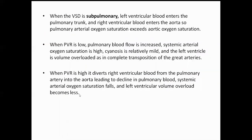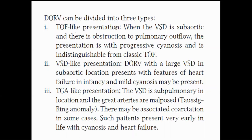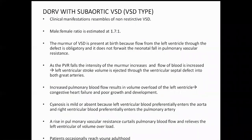To summarize, DORV is basically classified into three major presentations: VSD-like presentation and TGA-like presentation. For DORV with subaortic VSD, the clinical manifestations basically resemble a non-restrictive VSD. The pulmonary-to-systemic blood flow ratio is 1.72 to 1. There is a murmur of VSD at birth because flow from the left ventricle through the defect is obligatory and does not wait for neonatal PVR to fall.